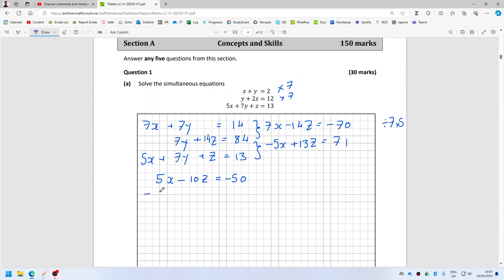And then the second equation is -5x + 13z = 71. I add these together now and I get 3z = 21, so I get z = 7.